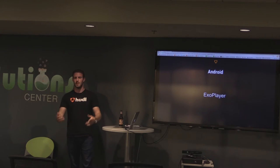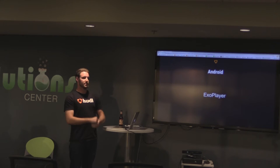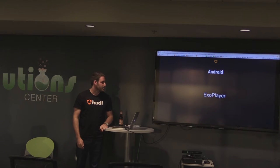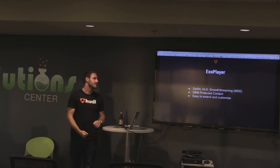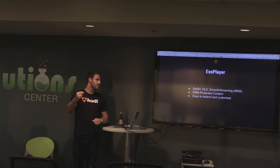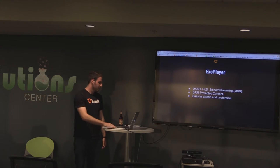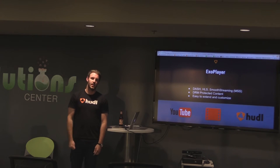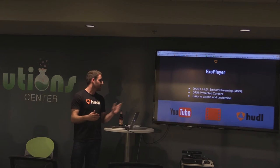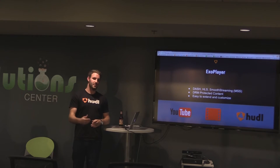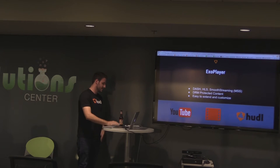Then Google came to the rescue and created what's called ExoPlayer. It's open sourced on GitHub right now, available through Gradle. ExoPlayer allows DASH, HLS, and Smooth Streaming, so now we get those adaptive qualities — videos in chunk formats, quality changes. YouTube, Play Movies, and even Huddle now are using it in their apps. If you're watching YouTube on your phone, you're probably seeing a large increase in quality compared to a year or two ago — and this is one of the reasons why.